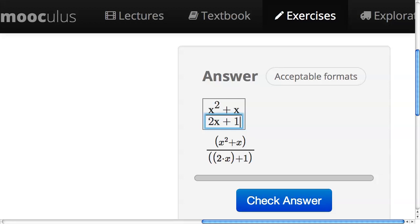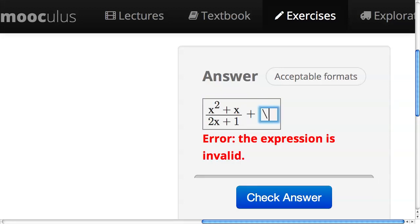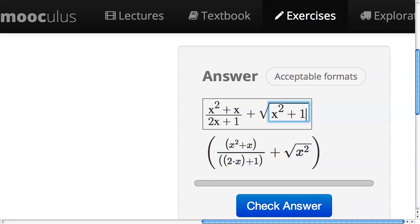Maybe I'm interested in adding a term with a square root. I'll use the arrow key to move over to the side, plus I'll use a backslash, sqrt, push space, and then I can type in something under the square root.